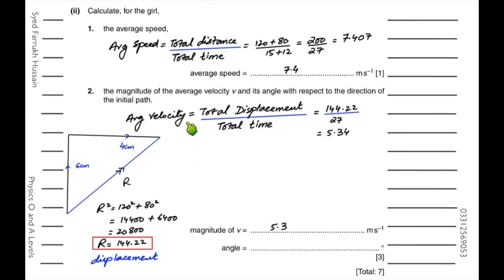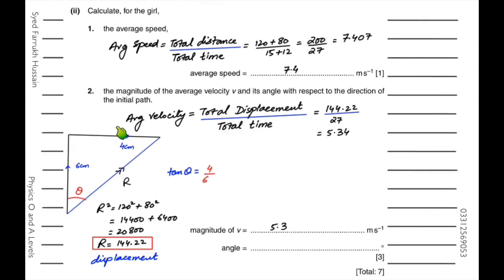To find the angle of the velocity vector, use the angle of displacement. Tan theta equals opposite over adjacent, so FY over FX, or you can use 80 over 120 — the same ratio. Theta equals tan inverse of 4 over 6, which gives 34 degrees.